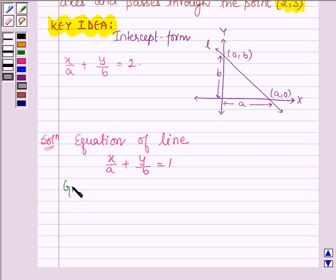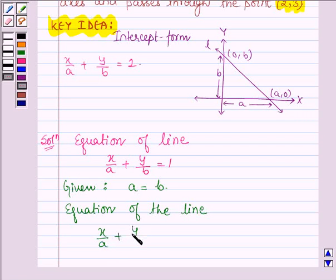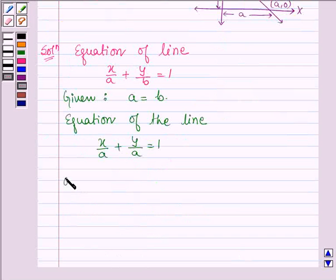So we are given A is equal to B. Therefore equation of a line can further be written as x upon A plus y upon A is equal to 1, or x plus y is equal to A.